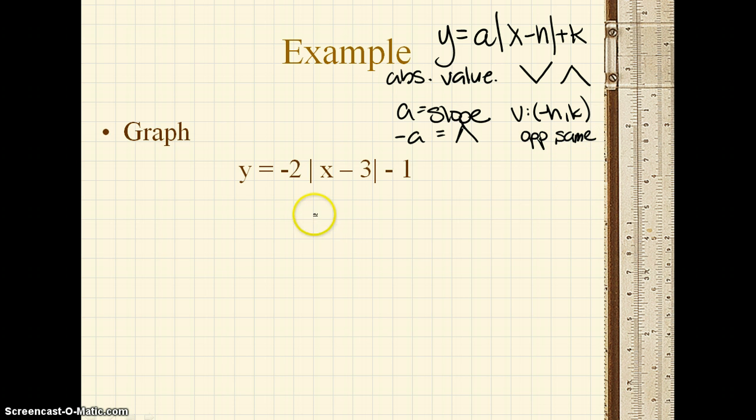So if we look at our example, the first thing that we're going to want to write down is which direction. So it is negative 2, so this one's going to make a mountain. From there, do x minus 3 is equal to 0, so x is equal to 3, which means that our h is equal to 3. And then we have minus 1, so our vertex is going to be 3 negative 1.